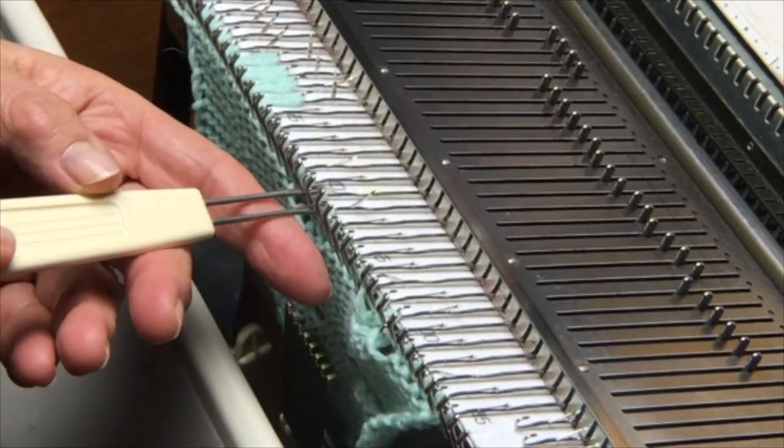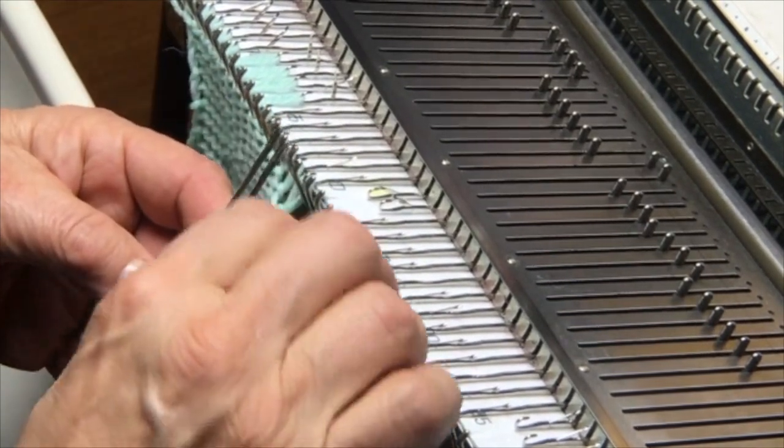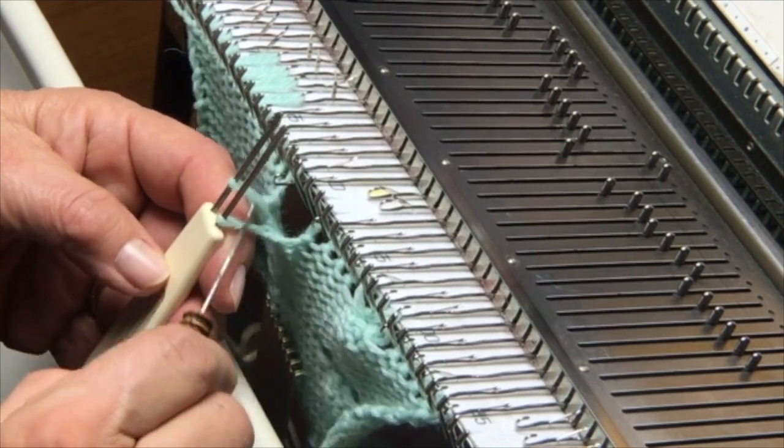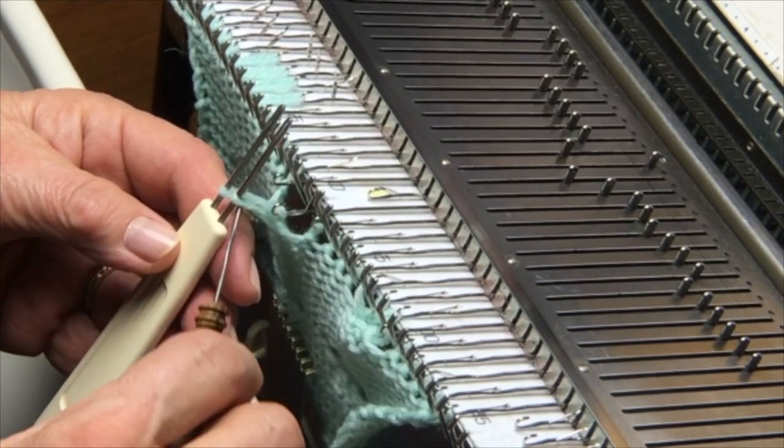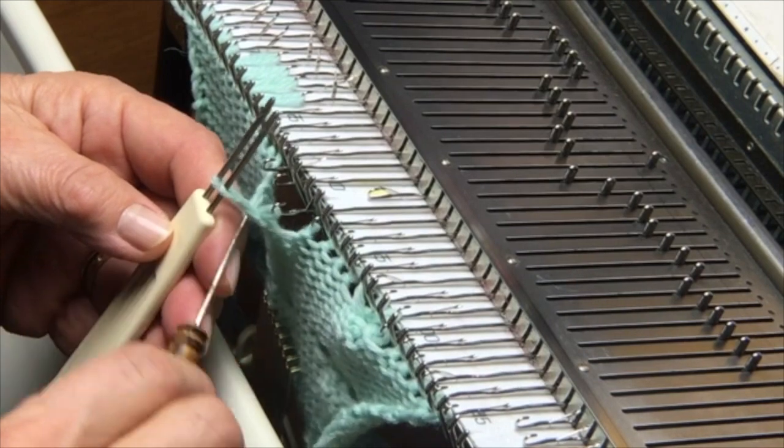I'm going to remove two stitches, pass the tool behind and in front, and then pull that third stitch through and put it on the first needle, and then grab the fourth stitch, pull it through and place it on the second needle.